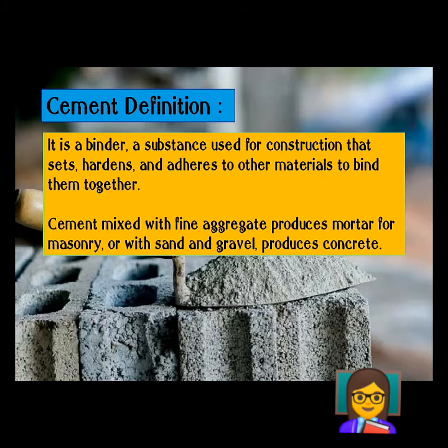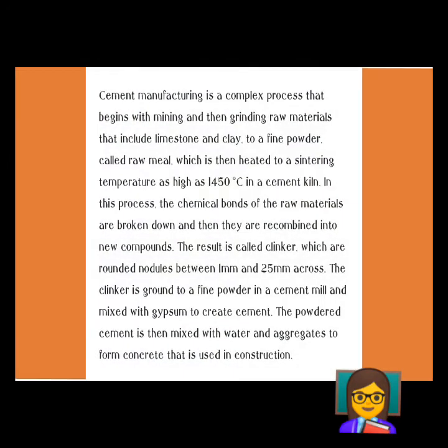When cement is mixed with sand and gravel, it produces concrete. For masonry works like plastering, or attaching one concrete block to another, cement acts like a glue — which is known as mortar when mixed with fine aggregates. Concrete blocks are formed when cement is mixed with sand and gravel.